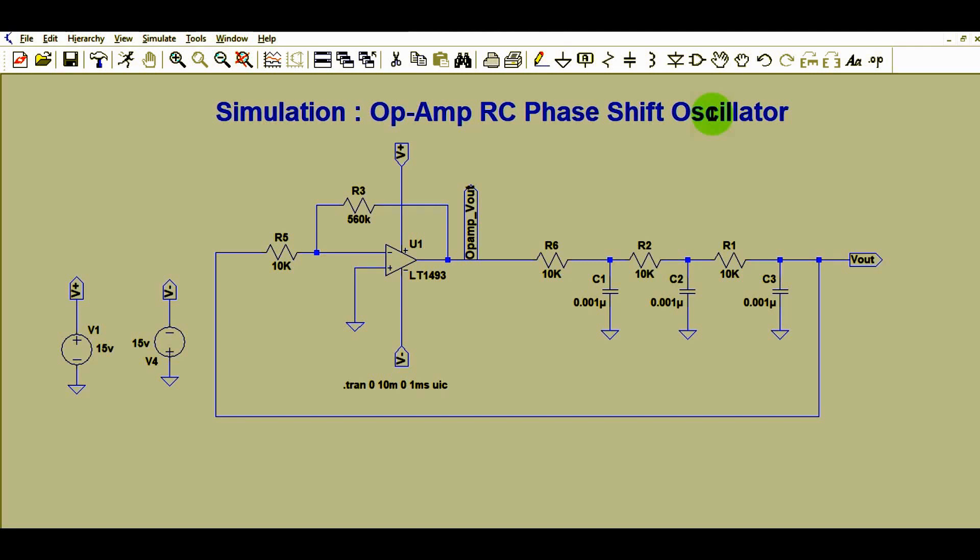This is the circuit diagram of op-amp RC phase shift oscillator I have already drawn here. I hope you can also draw the circuit in LT Spice. This is the operational amplifier LT1493, it is a very fast op-amp.